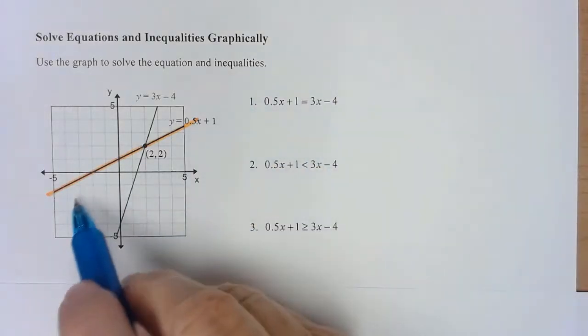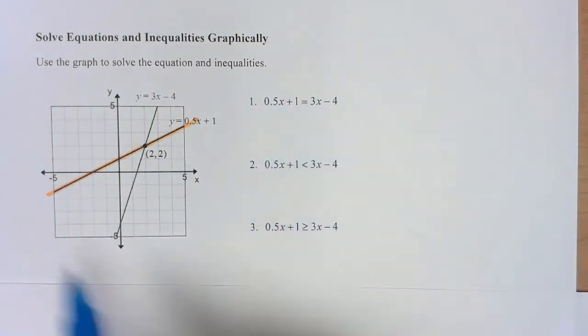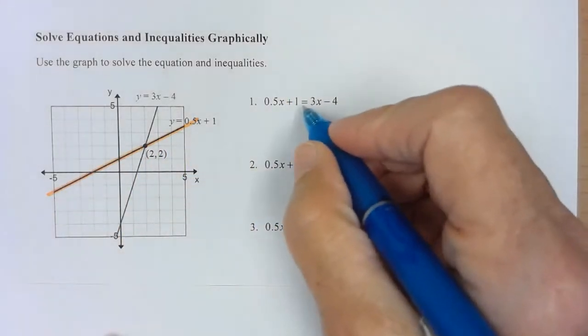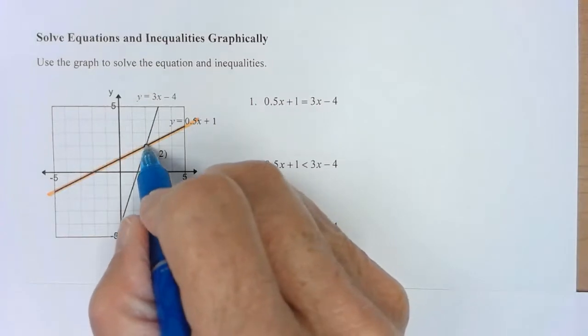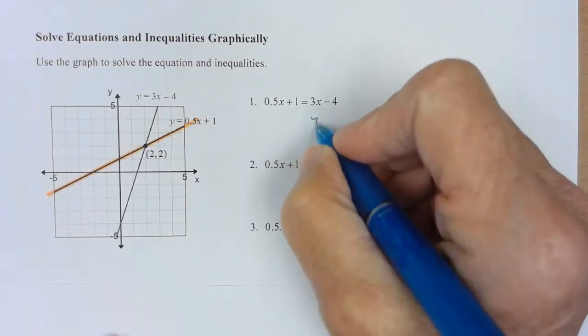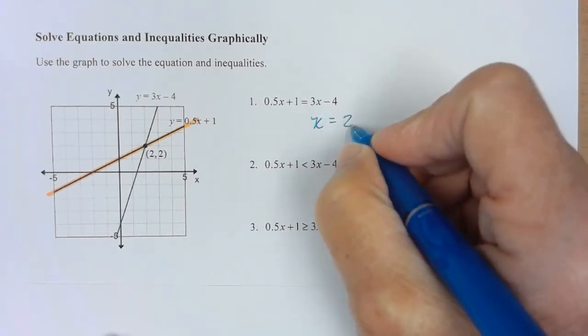Now I highlighted the first one, this y equals 0.5x plus 1. Now where they are equal is at this particular place right here. Since it is concerning x, my answer here would be x equals 2.